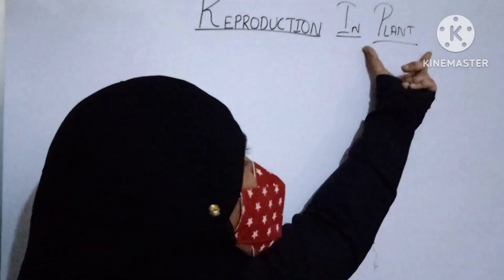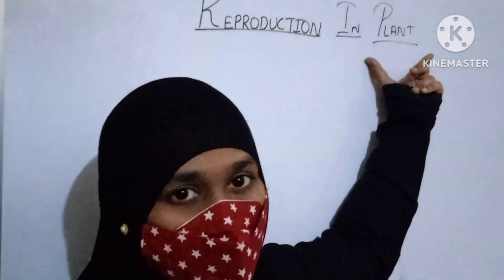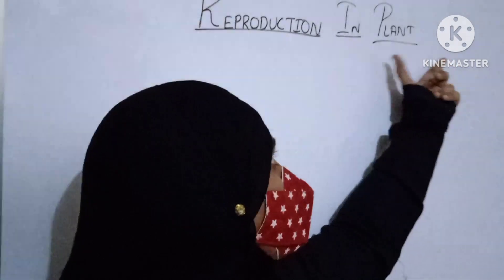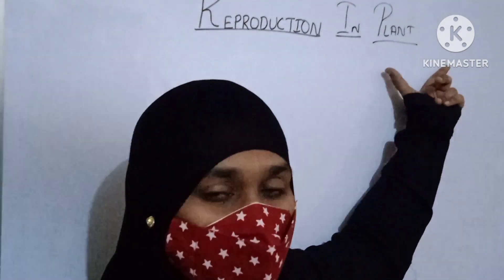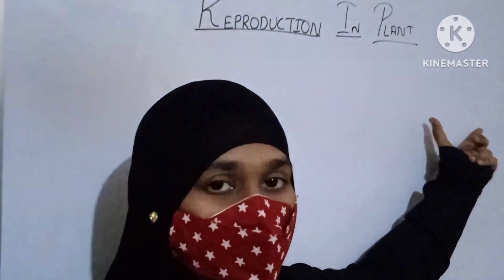First of all, we have to know what is a plant. A plant is a living thing. It has life on the earth. It grows. It has different shapes and size. It is green in color and it has different parts like root, stem, leaf, flower, fruit, etc.